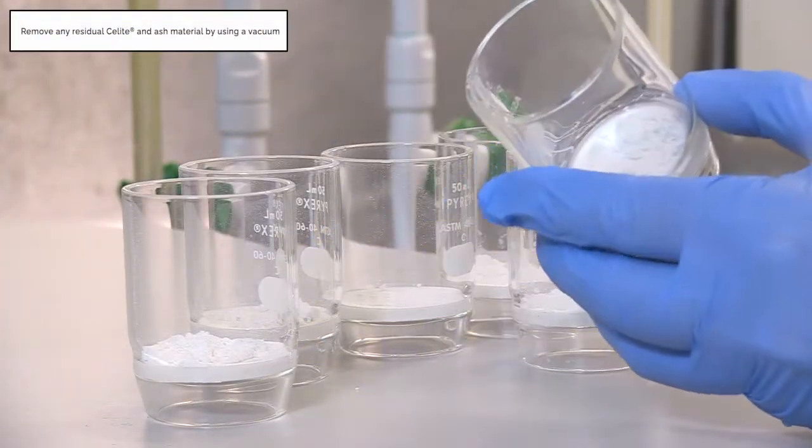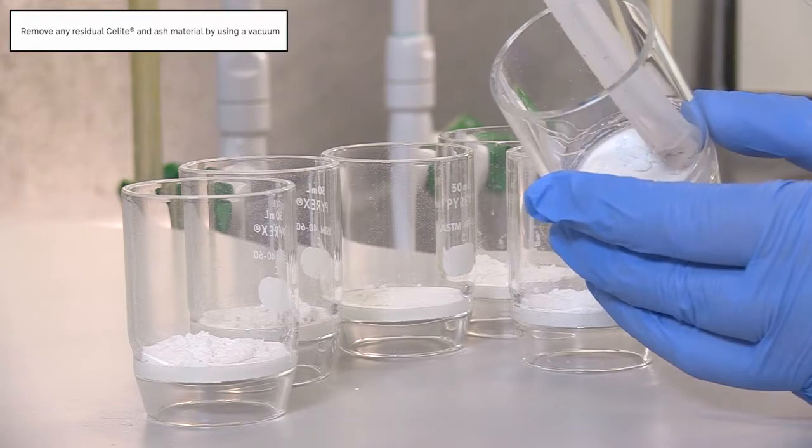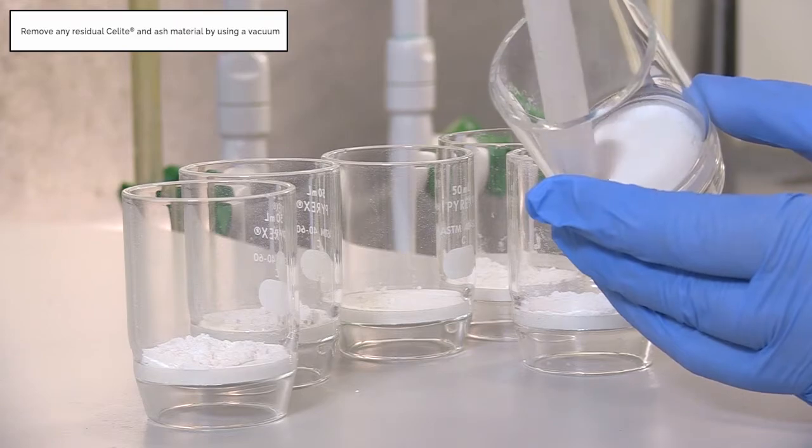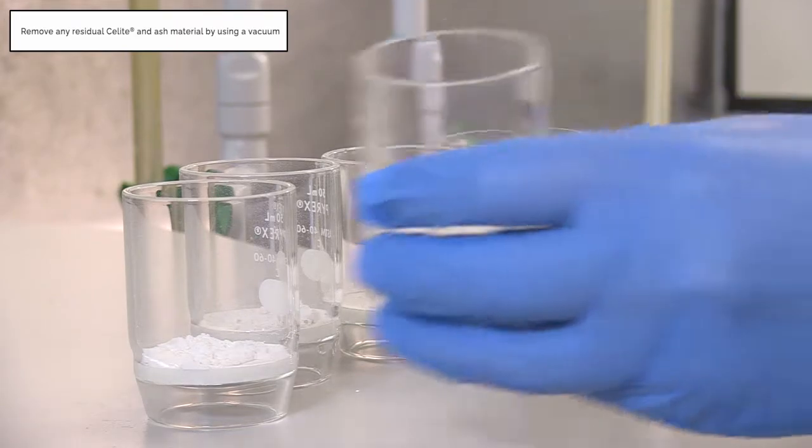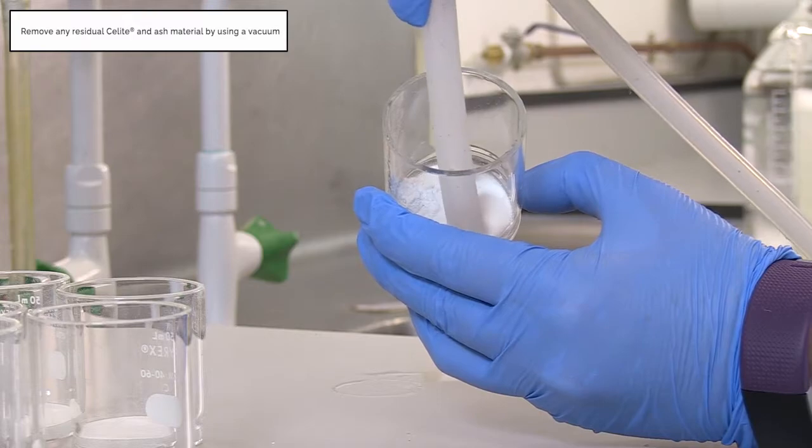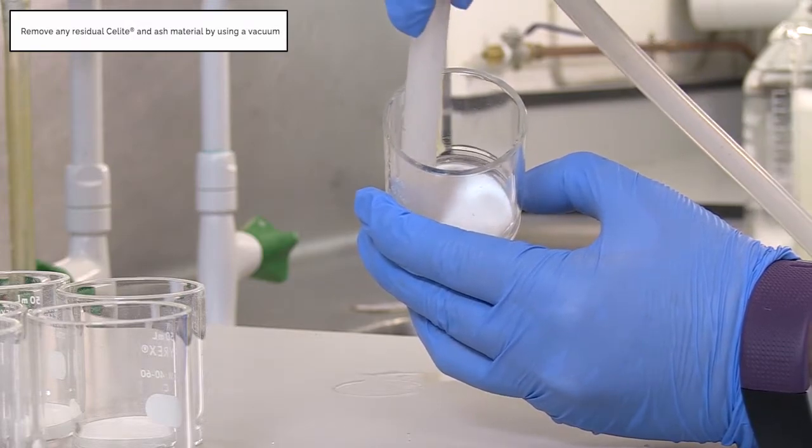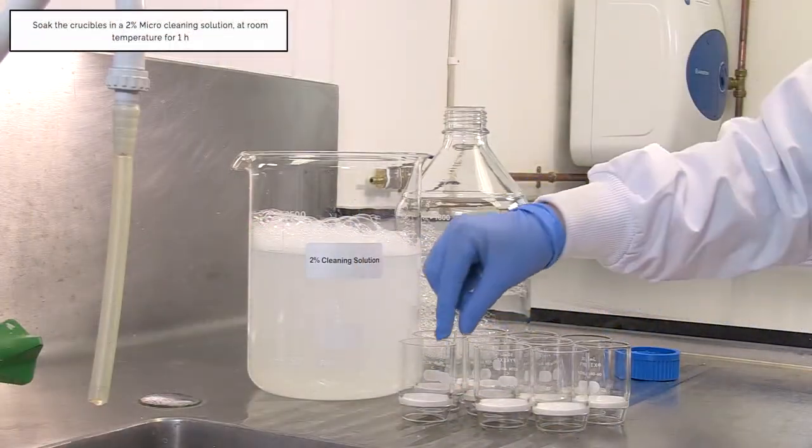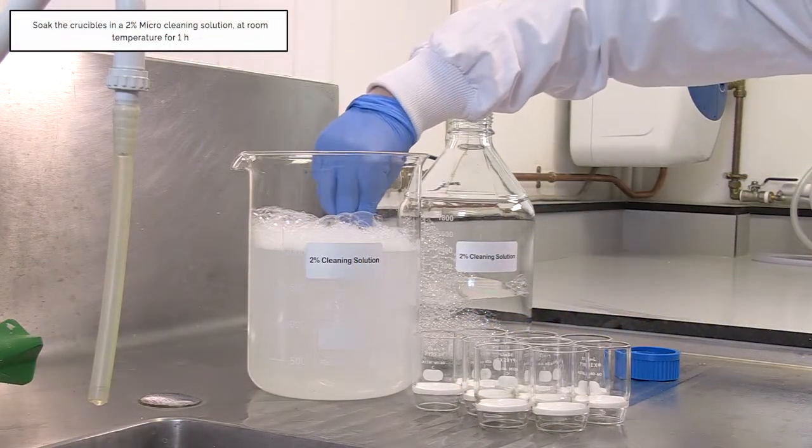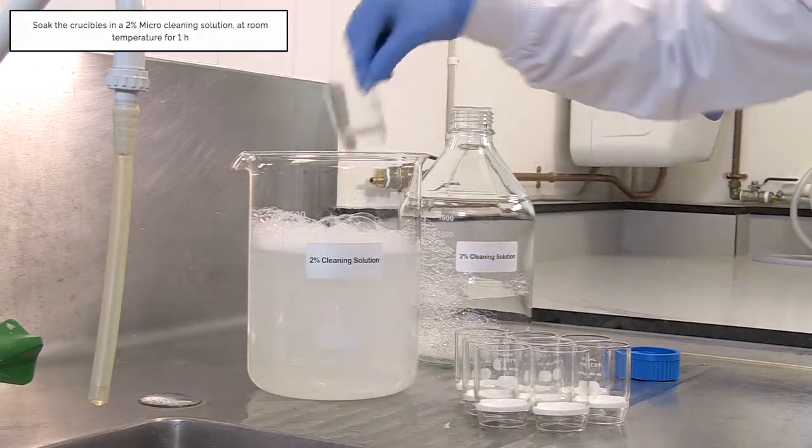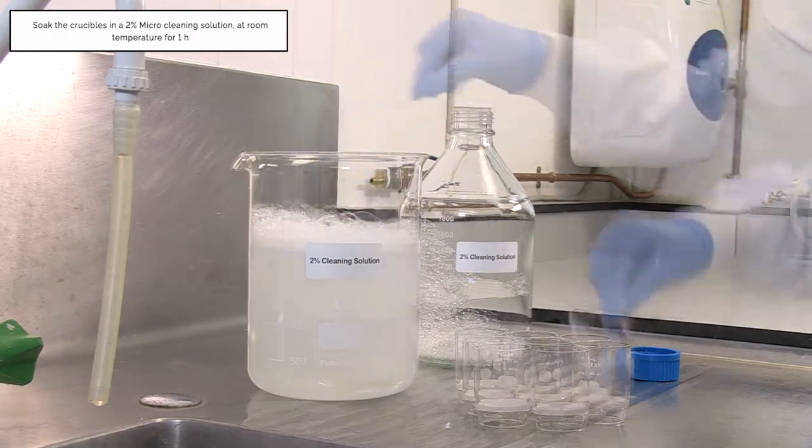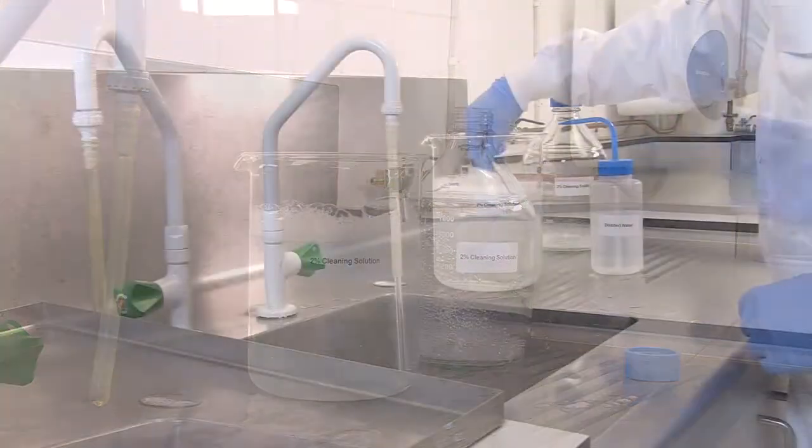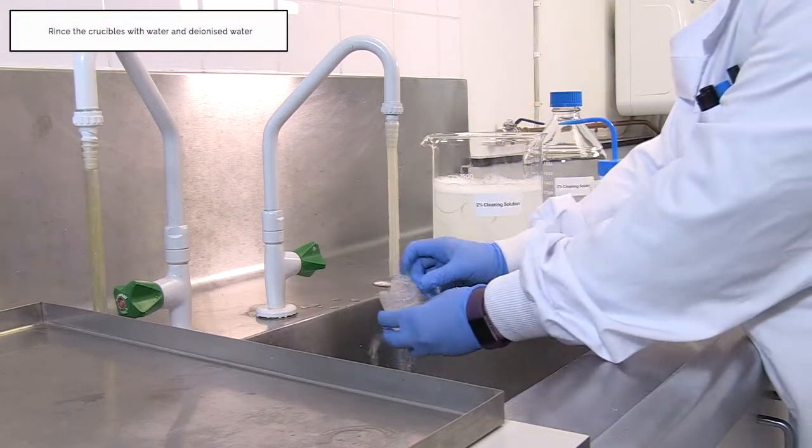Remove any residual celite and ash material by using a vacuum. Soak the crucibles in a 2% micro cleaning solution at room temperature for one hour. Rinse crucibles with water and deionized water.